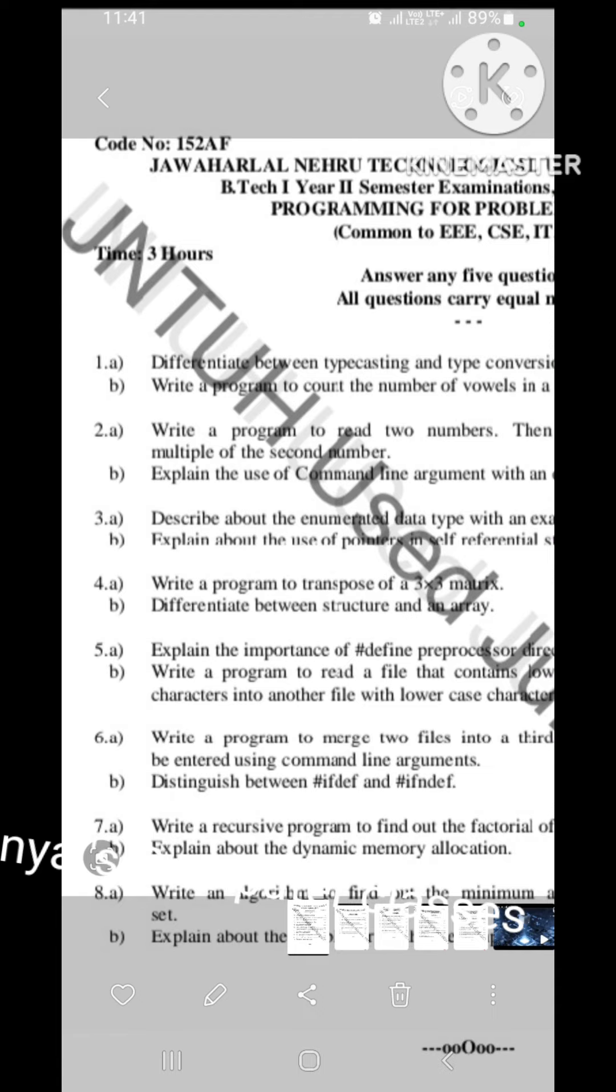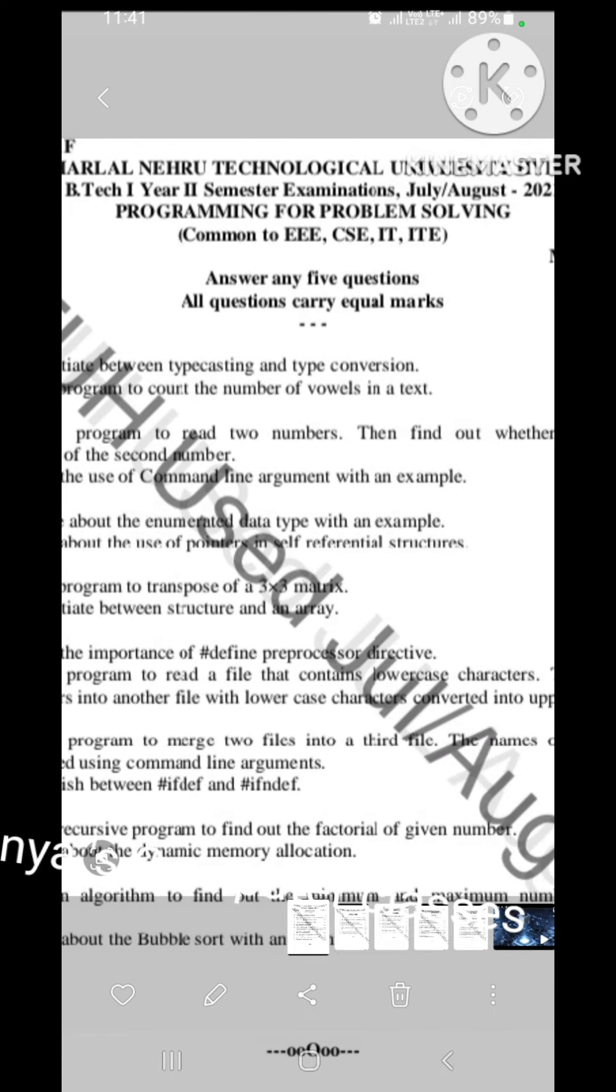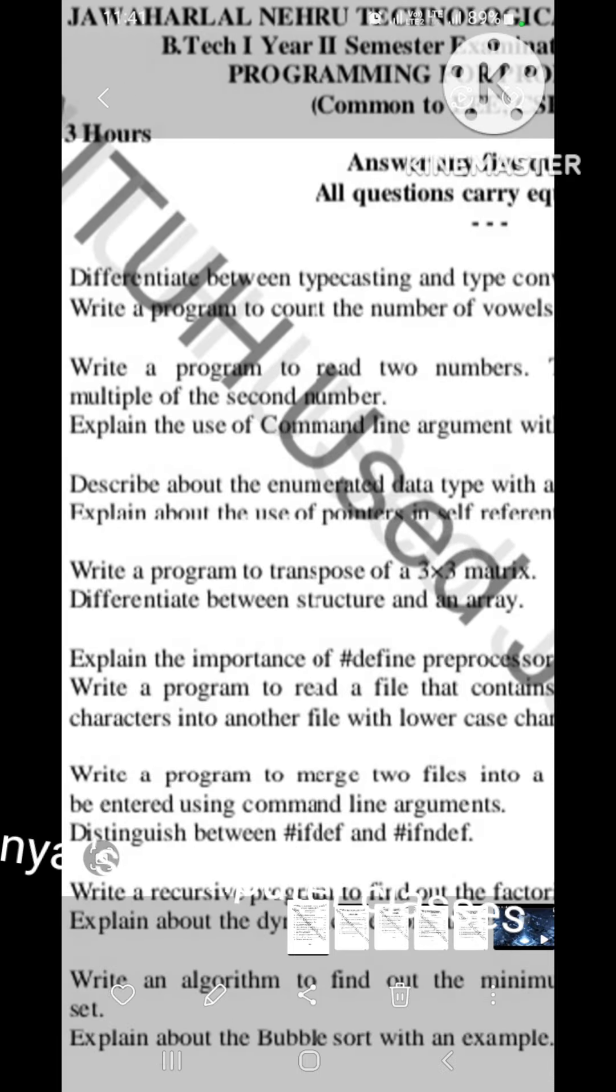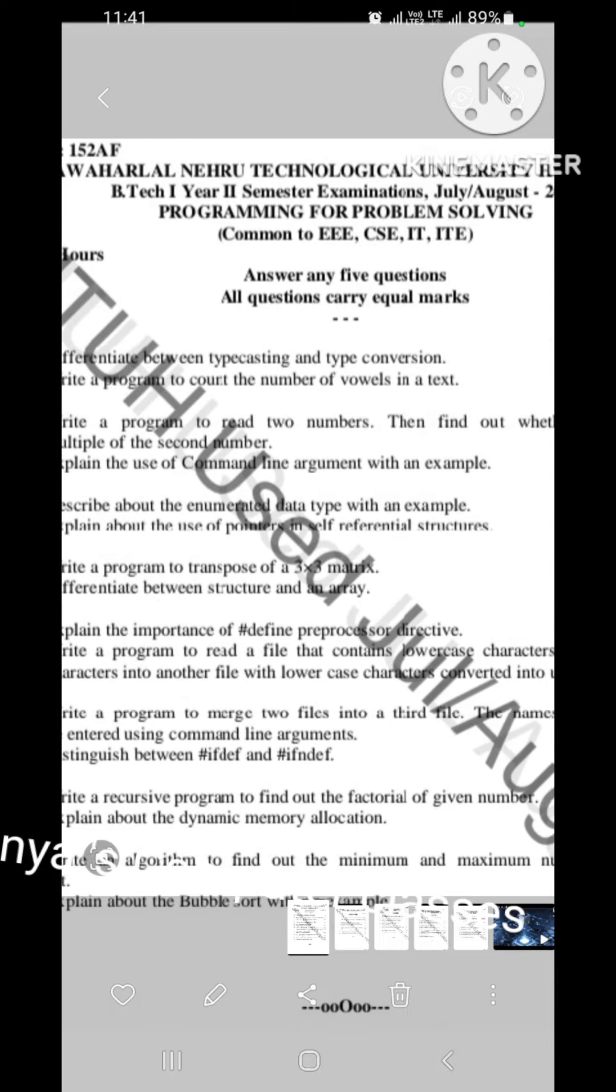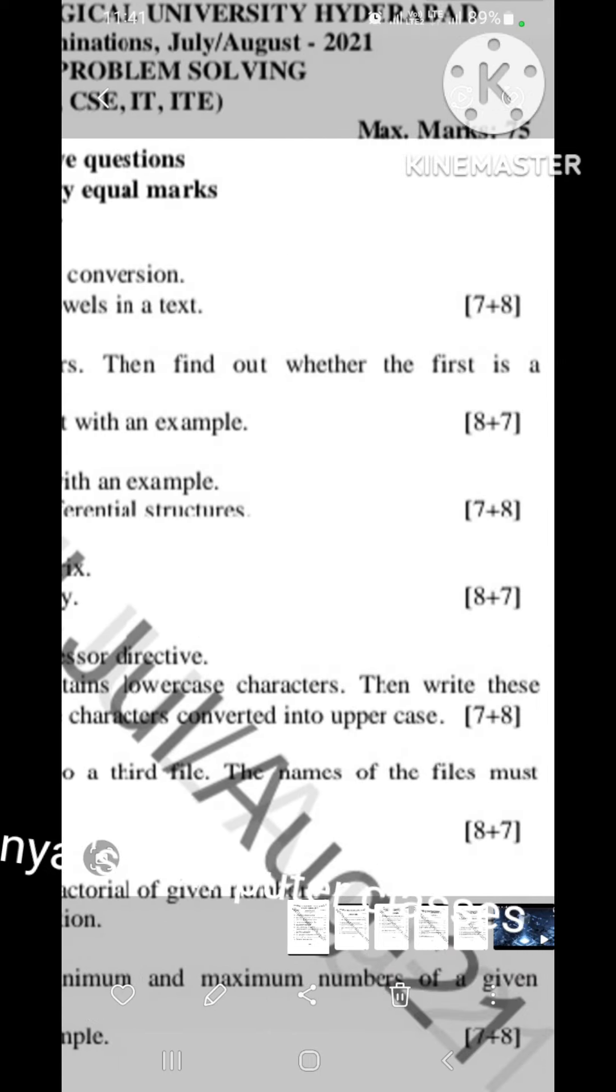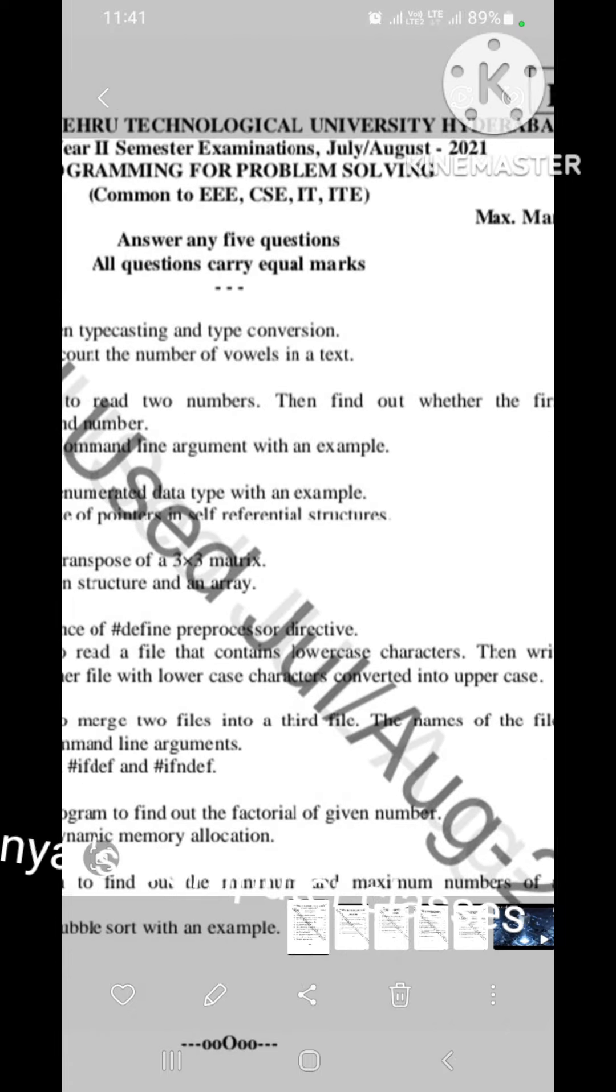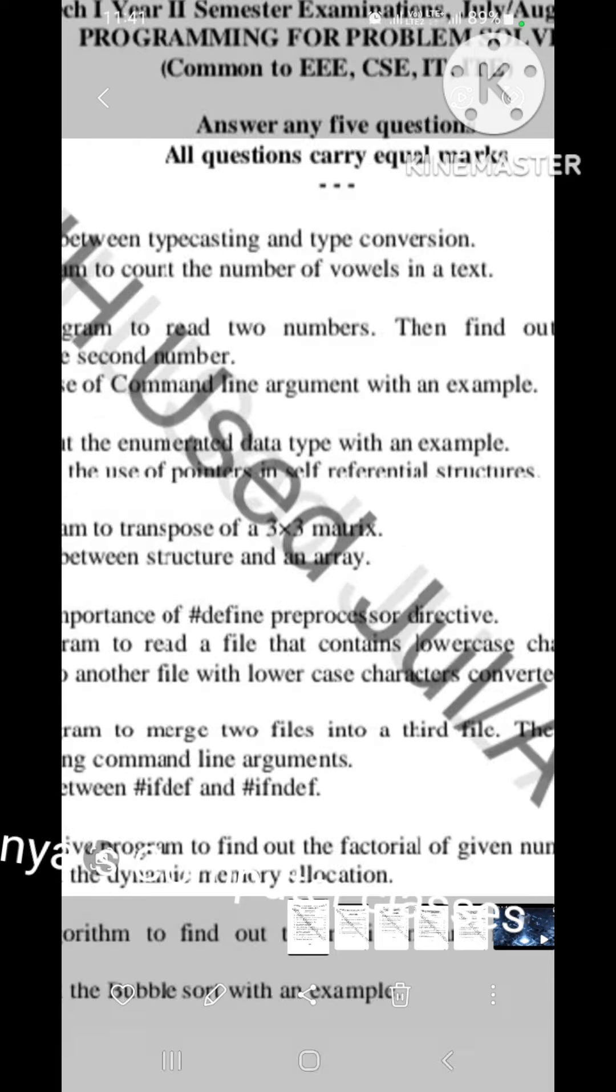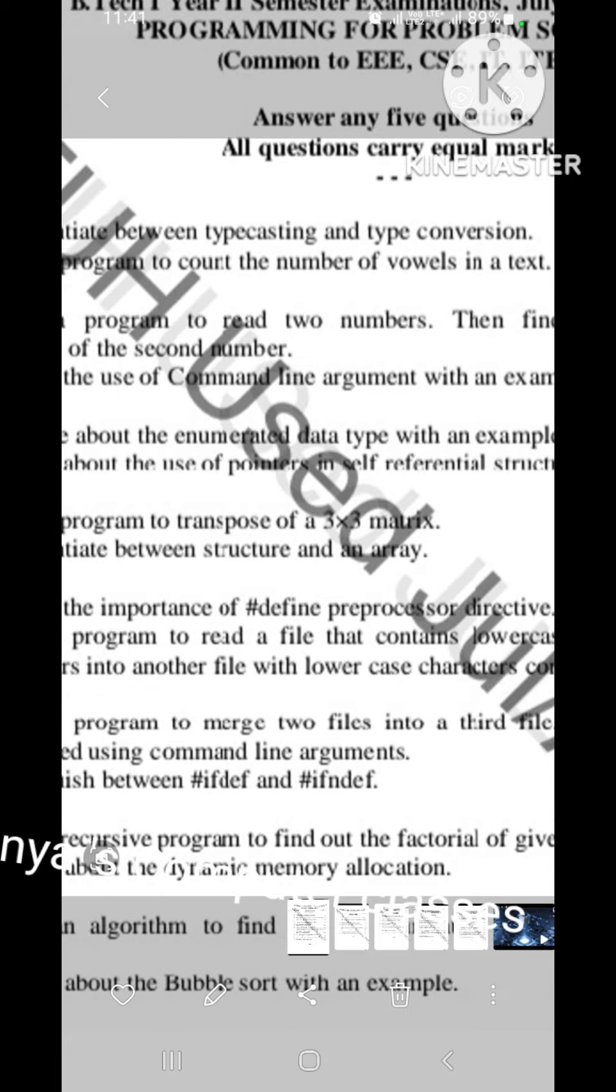Second question is, that is also program. Write a program to read 2 numbers. Then find out whether the first is a multiple of the second number. So, this is the program. You have to think and write the program. That is for 8 marks. B bit is, explain the use of command line arguments with an example. This is for 7 marks. For so many times, I have said in the PPS, command line arguments, typecasting, preprocessor commands, enumerated data types, preprocessor commands are very important questions.